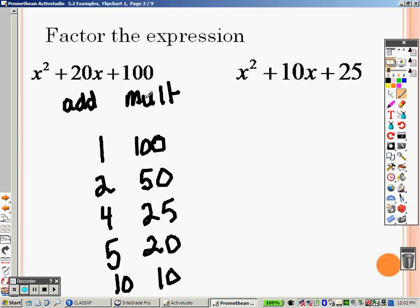But the point is, these are all numbers that multiply. When you multiply them together, they'll give you 100. However, not only do you need to find a list that does that, but which ones of these also add to give you 20?